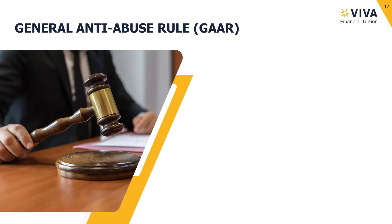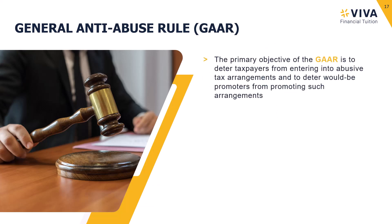Now we're going to look at the general anti-abuse rule. The primary objective of the general anti-abuse rule is twofold. Firstly, it is there to act as a deterrent to taxpayers and stop them from entering into abusive tax arrangements. Secondly, it is also there to act as a deterrent to scheme promoters — individuals, companies or firms that promote abusive tax arrangements and try to sell the use of these arrangements to taxpayers.